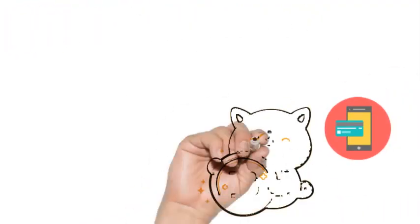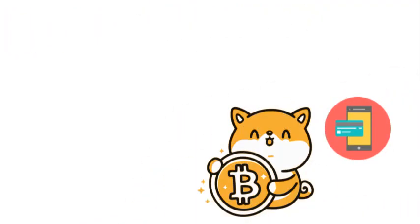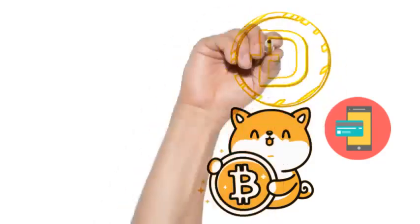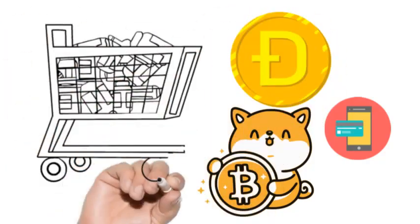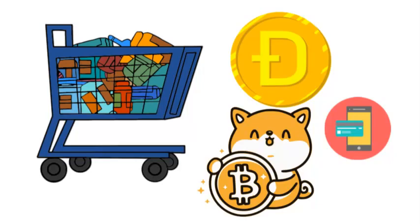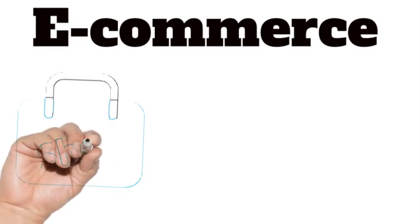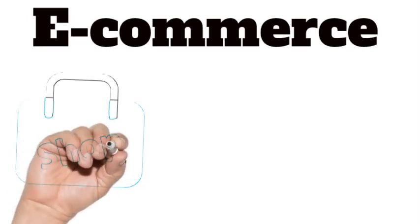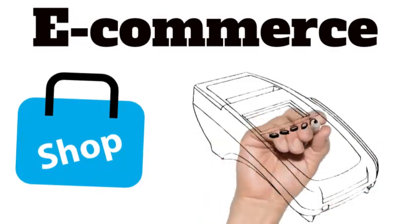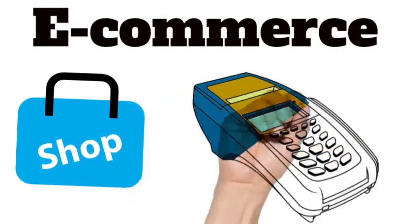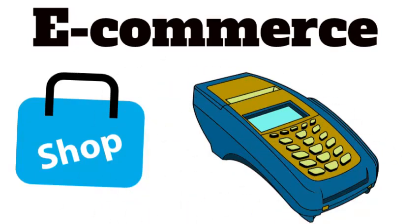X 2.0 users will be able to make and receive payments using Bitcoin or other cryptocurrencies. This will make it easier for users to tip creators or purchase goods and services directly on the platform. X 2.0 e-commerce could allow users to buy and sell goods and services directly on the platform. This will make Twitter a one-stop shop for users to connect with businesses and make purchases.